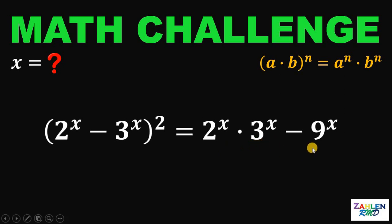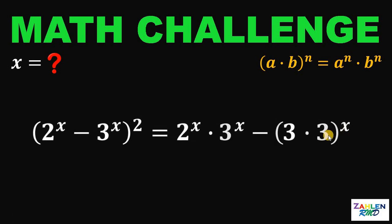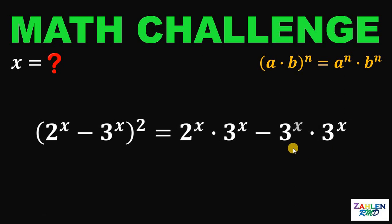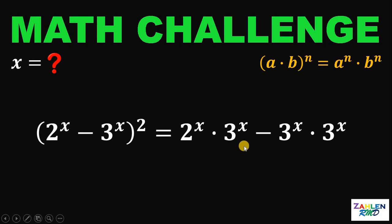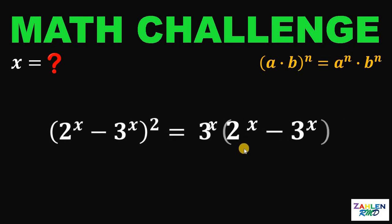We will do the same thing with the expression 9 raised to x, because 9 is just 3 times 3. This expression can be written as 3 raised to x times 3 raised to x. Now, the next thing we need to do is to factor out the common factor of 3 raised to x.